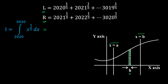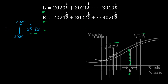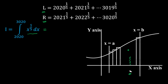Taking small rectangles with width h and height equal to the functional value, we can write this as a series. Let's say x = a is the left boundary and x = b is the right boundary, and we take the area of each small rectangle.